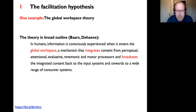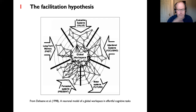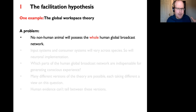Global Workspace Theory, outlined by Stanislas Dehaene in 'Consciousness and the Brain,' says that information is consciously experienced when it enters the global workspace—a mechanism that integrates content from many different sources (perceptual, attentional, evaluative, mnemonic, and motor) and broadcasts the integrated content back to input systems and onwards to consumer systems. There's a hypothesis about the cognitive architecture and an accompanying neuronal hypothesis about how that architecture is implemented through pyramidal neurons in prefrontal cortex and global ignition.